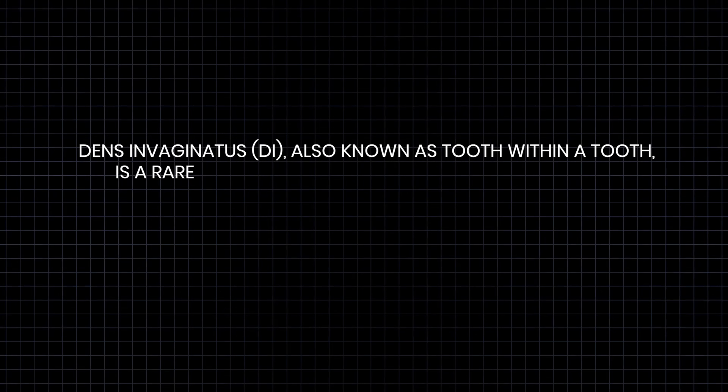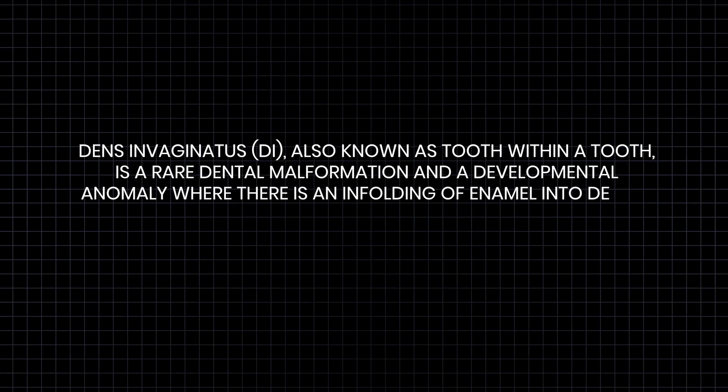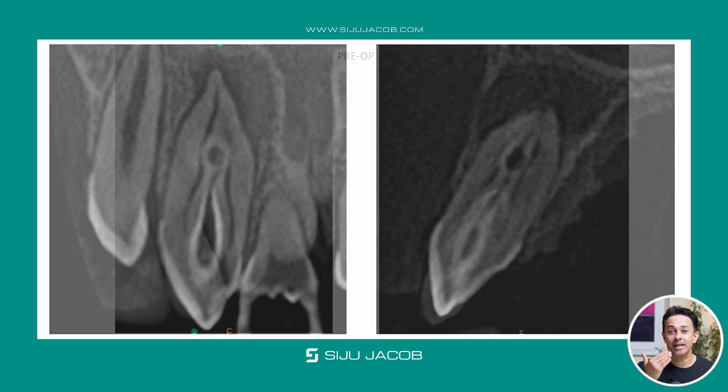Dense invaginators, also known as tooth within a tooth, is a rare dental malformation and developmental anomaly where there is an enfolding of enamel into dentine. Teeth most affected are the maxillary lateral incisors. Dense invaginators isn't something that you see every day in clinical practice, but when it does occur, it often occurs in the maxillary lateral incisor. Therefore, it is important sometimes to retain this tooth for an extended period of time, especially if the patient is a child. So it is important as a clinician to understand what this clinical condition is and what the options are at your disposal to manage these sort of cases in everyday clinical practice.